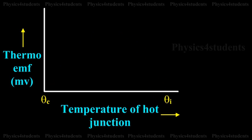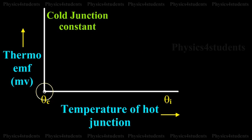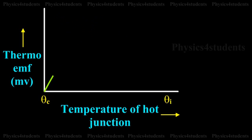Keeping the temperature of the cold junction constant, the temperature of the hot junction is gradually increased.